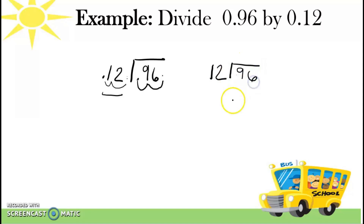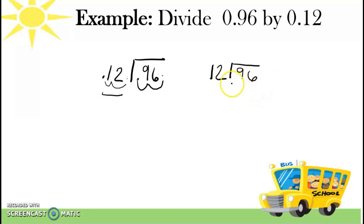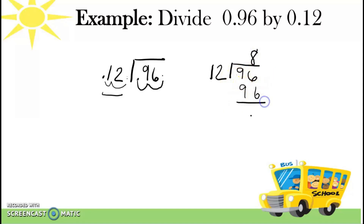So magiging 96 divided by 12. So pareho silang natin dito na decimal point, which is hindi na natin ilalagay kasi whole number na sila. So divide natin. So 96 divided by 12. 8 times 12 is 96. So sakto, walang remainder. So 96 minus 96 is 0. So our final answer is 8.